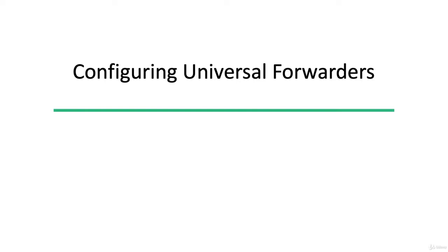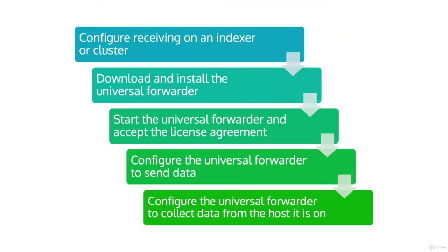Configuring universal forwarders. There are five steps to configure universal forwarders. First, we configure receiving on an indexer, an indexer cluster, or an indexer search head. Then we download and install the universal forwarder on the remote system, and of course we have to start the universal forwarder and accept the license agreement. Then we configure the universal forwarder to send data. In a Windows environment, when you install the universal forwarder, you actually do this as part of the installation wizard.